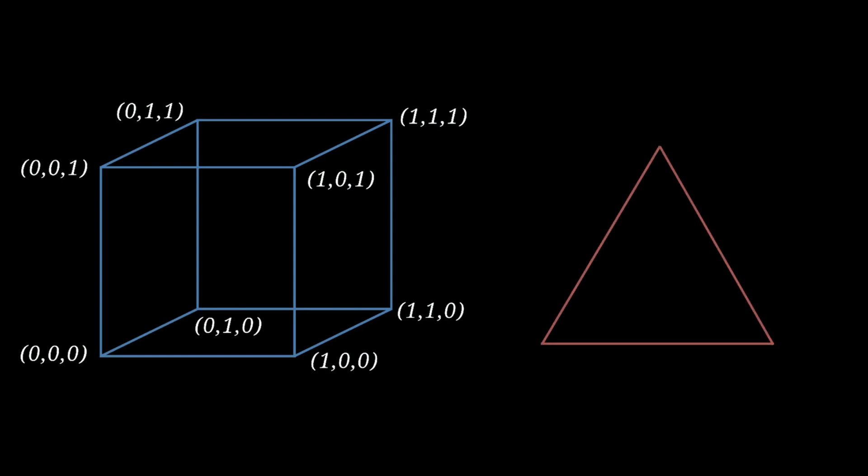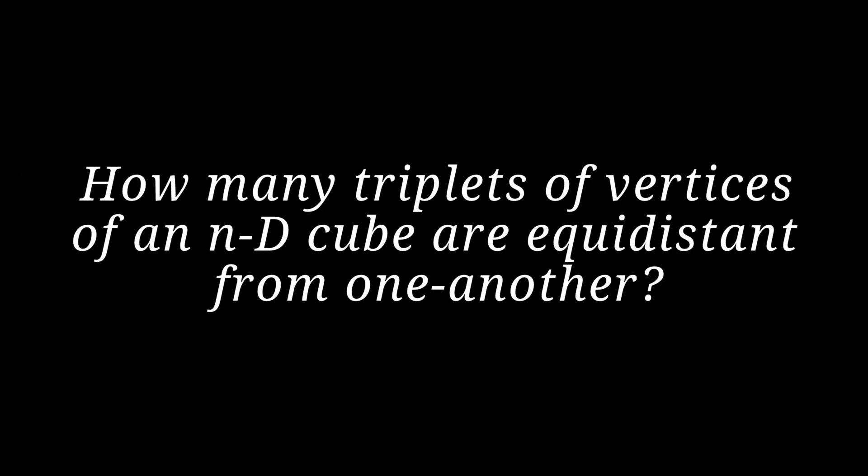And how do we define an equilateral triangle? Well, it's a collection of three points which are equidistant from each other. So now, the question can be rephrased to ask, how many triplets of vertices of an n-dimensional cube are equidistant from each other?